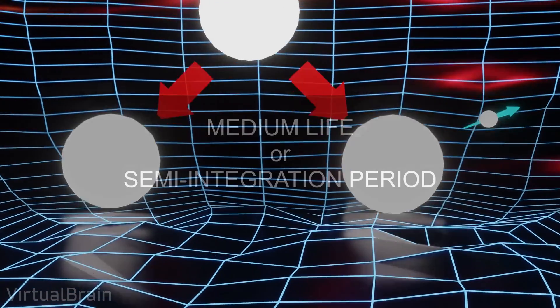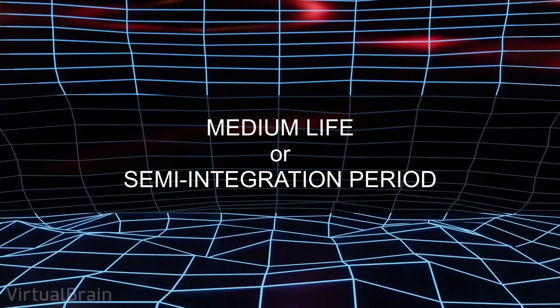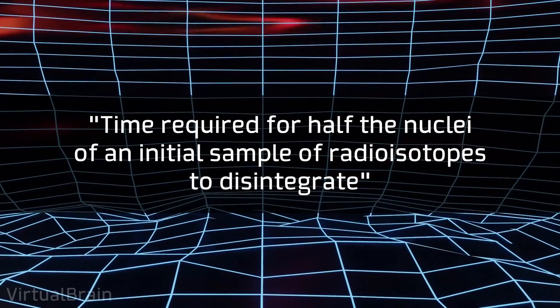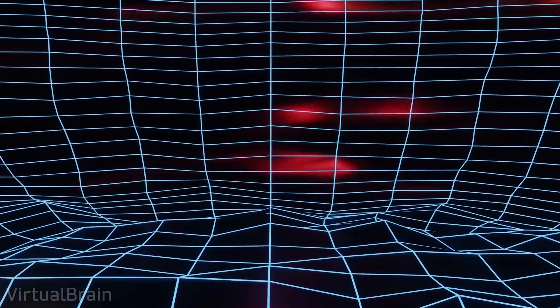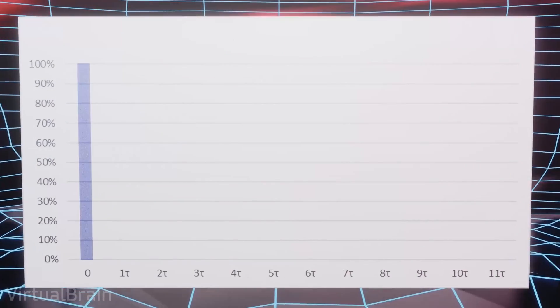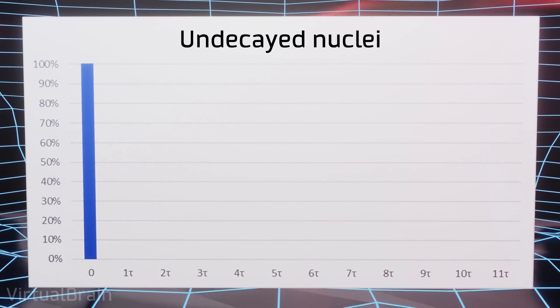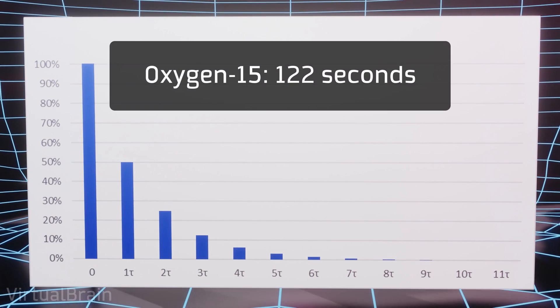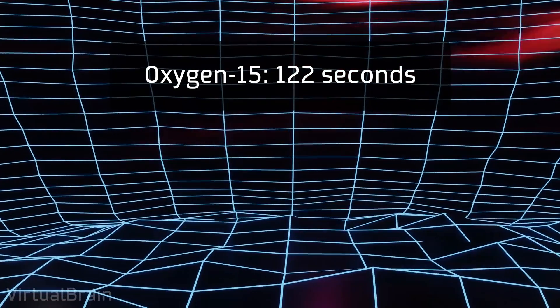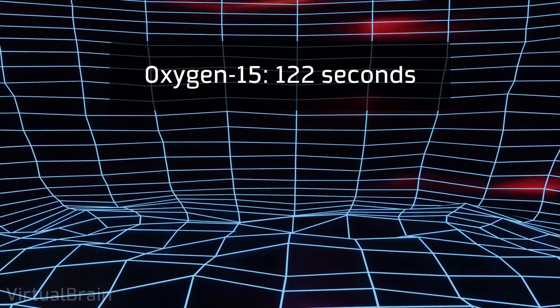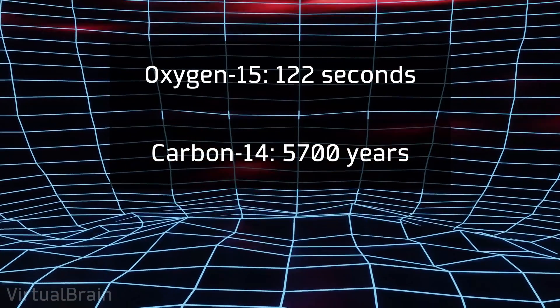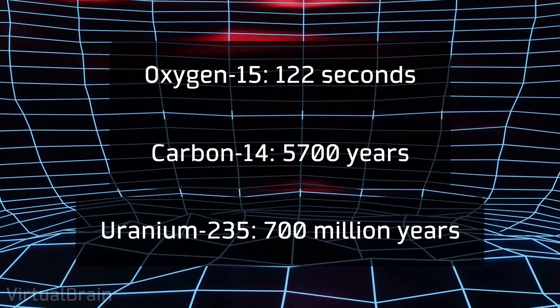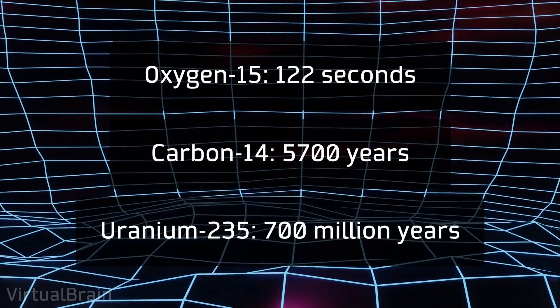The most common way to measure the speed of decay is by calculating the median life or half-life of the particles, which corresponds to the required time for half the nuclei of an initial sample of radioisotopes to decay. That is, if at zero time we have 100 percent of the nuclei without disintegration, when this period passes, there will be 50 percent, then 25 percent, then 12.5 percent, and so on. For isotopes such as oxygen-15, where 15 represents the sum of neutrons and protons of the atom, this period is just 122 seconds, for carbon-14, 5,700 years, and for uranium-235, some not at all insignificant 700 million years.